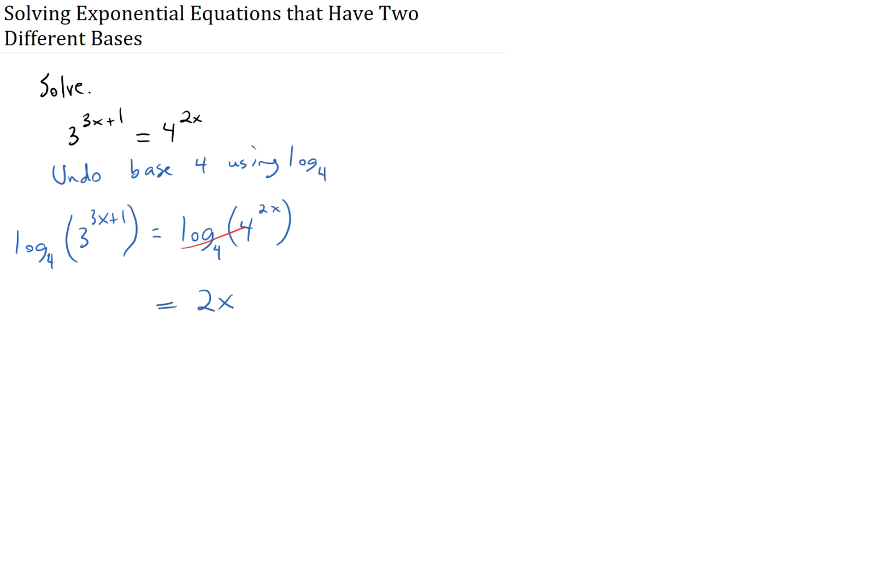Unfortunately, on the left side, a log base 4 doesn't cancel an exponential in base 3. But what we can do is use a logarithm law because now I've got a logarithm on the left. I can turn this exponent into multiplication by a coefficient. So, that's going to turn into 3x plus 1 times log base 4 of 3. So on this side, we used a log law. And on this side, they canceled because the bases were the same.